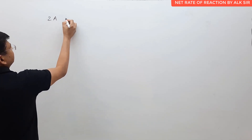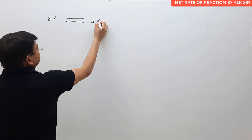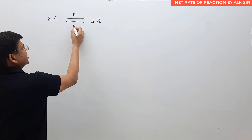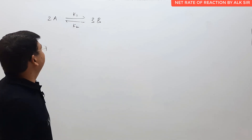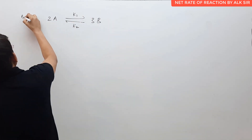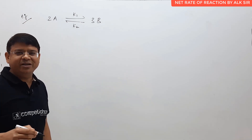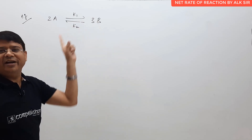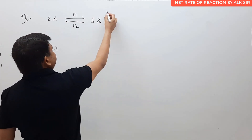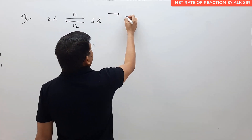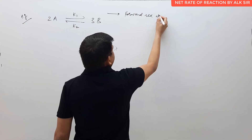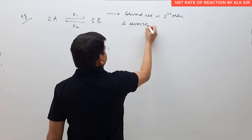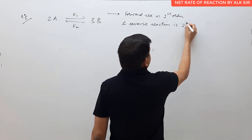Let us consider a case: 2A converting to 3B. This is a reversible chemical reaction with rate constant K1 in the forward direction and rate constant K2 in the reverse or backward direction. For this specific case, I am going to write the expression of the rate of disappearance of A, rate of appearance of A, rate of disappearance of B, or rate of appearance of B. The forward reaction is first order and the reverse reaction is second order.